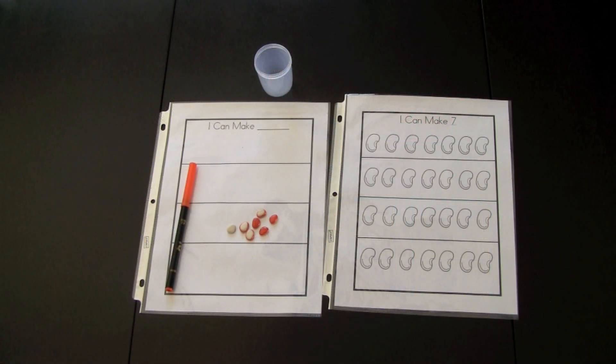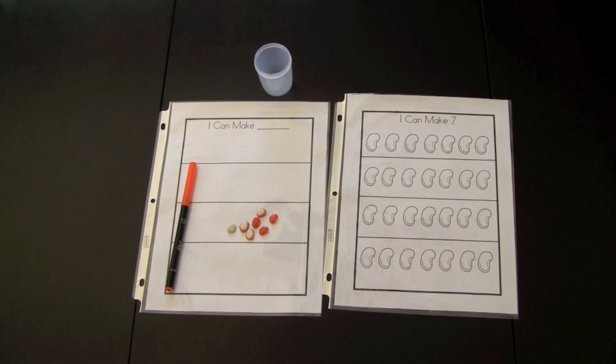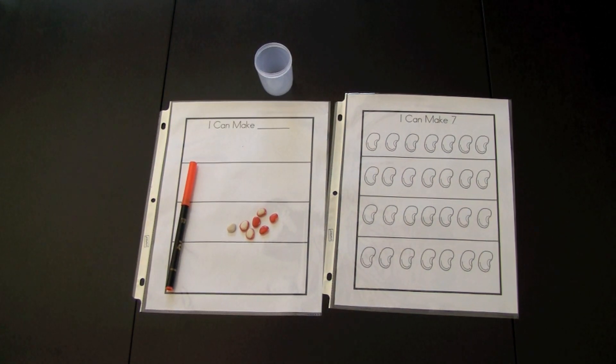One of the curriculum outcomes are that children are to understand that a number is made up of two parts. This game is great for demonstrating this to the children.